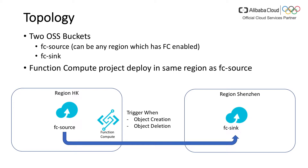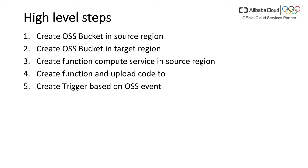Here is the topology we would like to discuss. We will involve several things. First, we will have two buckets. One is the Function Compute source bucket — it can be any region that has Function Compute enabled, which is essential. Another bucket is the sync target, which can be any region used to copy files to. We also need to deploy our Function Compute project in the same region as the source bucket. In this example we will use the Hong Kong region and the Shenzhen region. When files are created or deleted in the source bucket, the Function Compute event will replicate that change to the sync bucket.